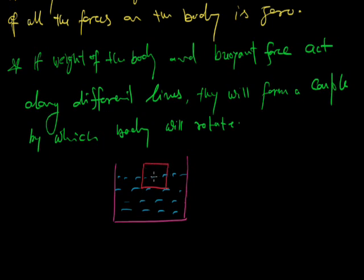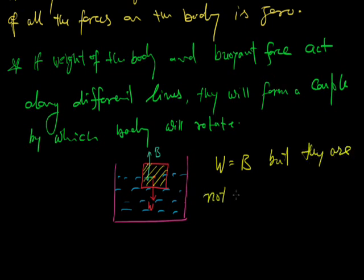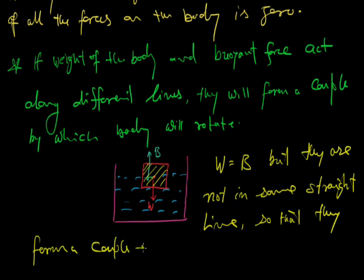Consider the center of gravity — the weight of the body W acts downward and buoyant force B acts upward, but both lines of action of weight and buoyant force are different, so they form a couple by which the body will rotate. Even when W is equal to B, they are not acting along the same straight line, which is why they form a couple causing the body to rotate.